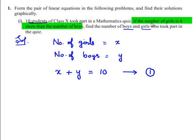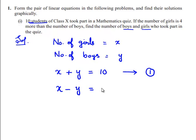According to the second condition, the number of girls is 4 more than the number of boys. Since x is the number of girls and y is the number of boys, x minus y is nothing but 4. This is because the number of girls is 4 more than the number of boys, so we can say x − y = 4. This is the second equation. So one part of the question is completed — we have found the pair of linear equations: x + y = 10 and x − y = 4.